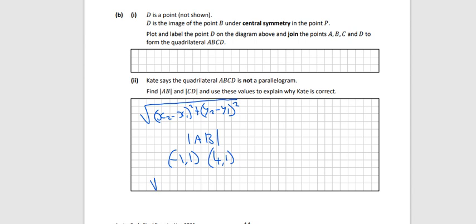We're going to use the distance formula. That's x1, y1, x2, y2. So 4 minus (-1), which is 4 plus 1 squared, plus 1 minus 1 squared. You can use a calculator there. We get 5 in the end.